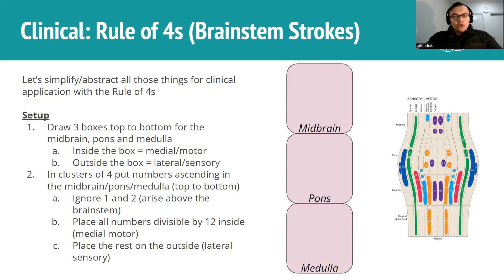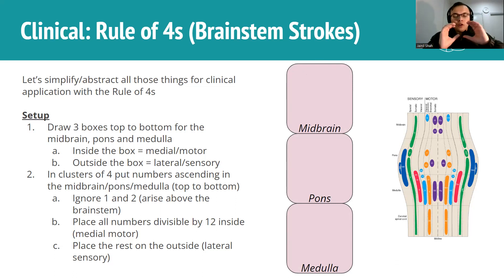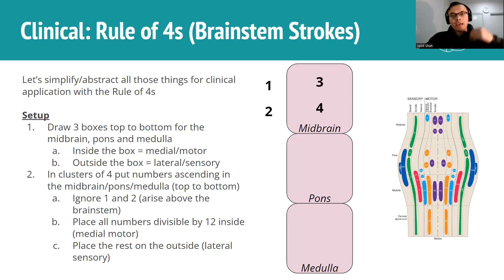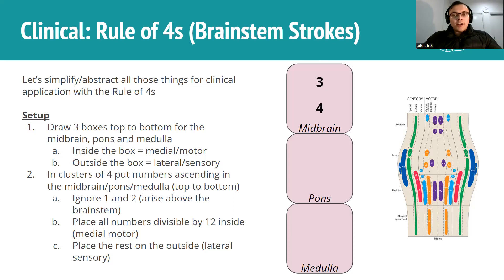We work in clusters of four: one, two, three, four in the midbrain; five, six, seven, eight in the pons; and nine, ten, eleven, twelve in the medulla. In the midbrain cluster, we ignore one and two because the optic and olfactory nerves arise way above the brainstem - they're almost cerebral structures. Three and four are medial because everything divisible by or a factor of 12 is going to be medial, and three and four are factors of 12.